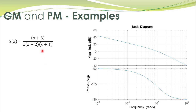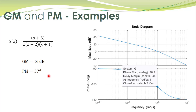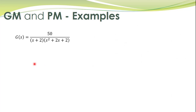For another system with a Bode diagram, we locate the gain crossover point and read the phase to determine the phase margin, which is 36.9 degrees. For gain margin, we locate the point where phase equals minus 180 degrees — this occurs at frequency equal to infinity, where the gain drops to minus infinity dB. Hence the gain margin is infinity, and the closed loop system is stable.